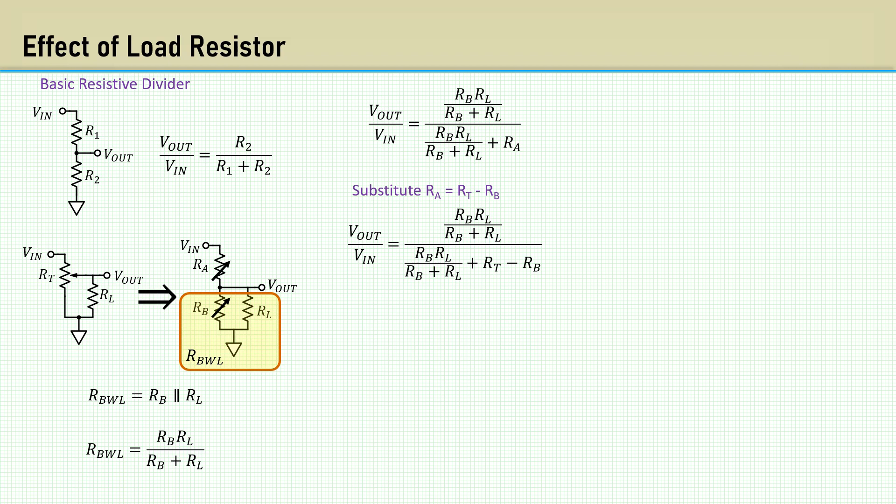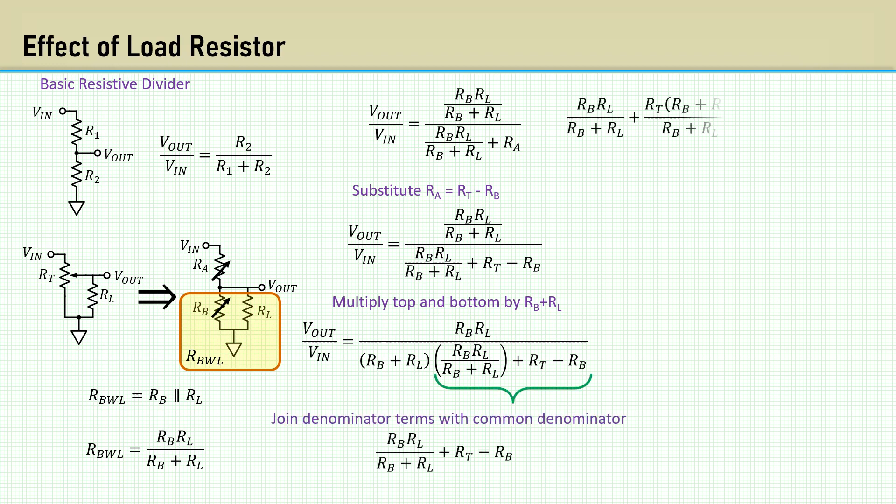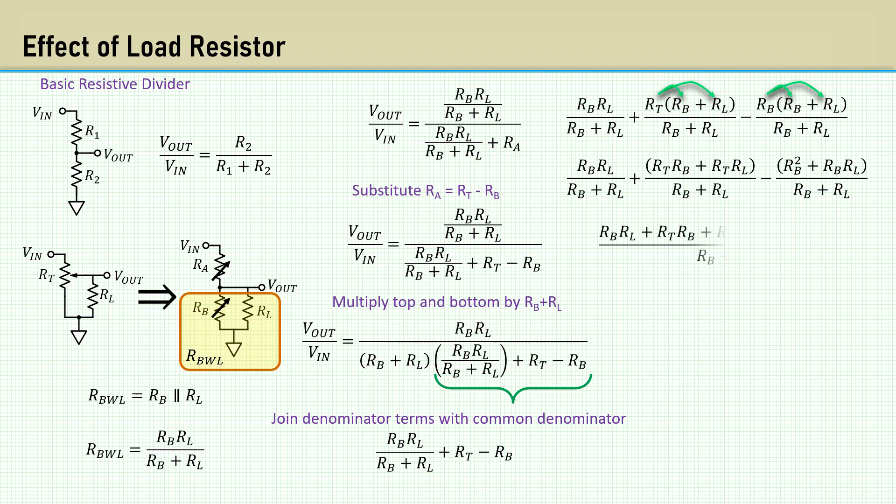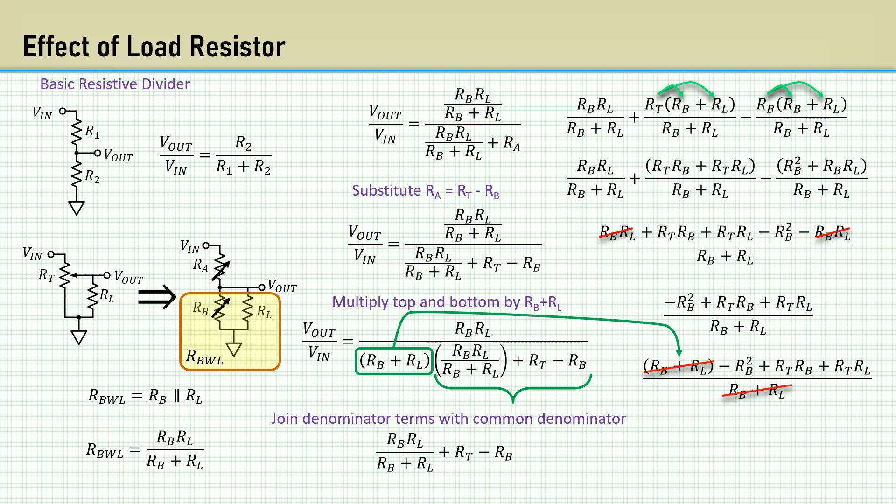Now let's simplify. Multiply top and bottom by RB plus RL. Now join these three terms using the common denominator of RB plus RL. Distribute RT and RB. Adding the terms gives us this. Then the RB RL terms cancel. Now let's bring the RB plus RL term back into the equation. The RB plus RL terms cancel. And finally, we have our equation to plot voltage attenuation of a pot with a specific load resistor.